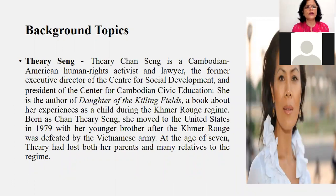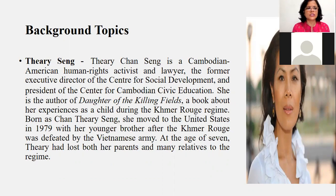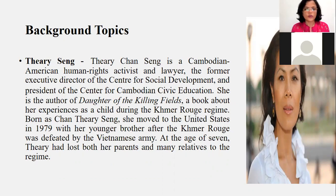Another writer from Asian literature is Theri Singh — a Cambodian-American human rights activist and lawyer, former executive director of the Center for Social Development, and President of the Center of Cambodian Civic Education. She is the author of Daughter of the Killing Fields, a book about her experiences as a child during the Khmer Rouge regime, which was a Communist Party-supported regime. Born as Chan Theri Singh, she moved to the United States in 1979 after the Khmer Rouge was defeated by the Vietnamese army. By the age of 17, Theri had lost both her parents and many relatives to the regime.